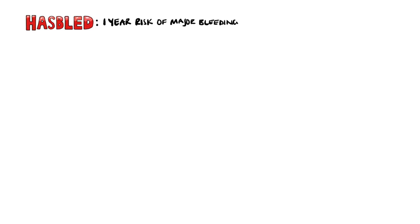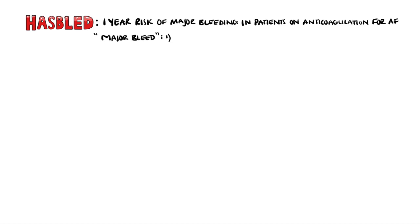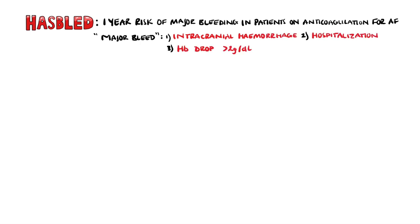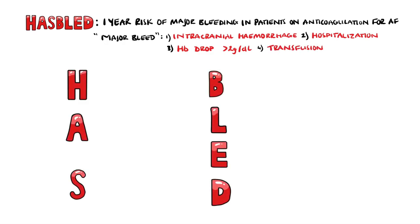HASBLED is a scoring system used to assess the one-year risk of major bleeding in patients on anticoagulation for atrial fibrillation. Major bleeding refers to intracranial hemorrhages, bleeding requiring hospitalization, a hemoglobin drop of more than 2 grams per deciliter, or the need for transfusion.